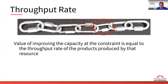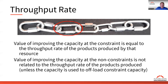The value of improving the capacity of a constraint is equal to the throughput rate of the products produced by that resource — so if we're getting additional time on that resource, that's what it's worth to the organization. The value of improving capacity at non-constraints is not related to the throughput rate of the products produced, unless that capacity is used to offload constraint capacity. Only if we can increase capacity here and offload from the constraint does it help the constraint produce more units.